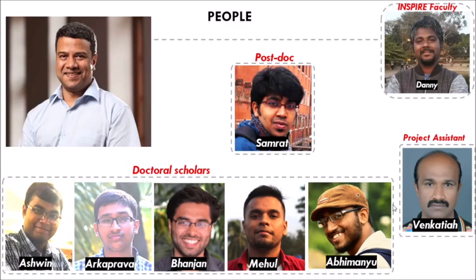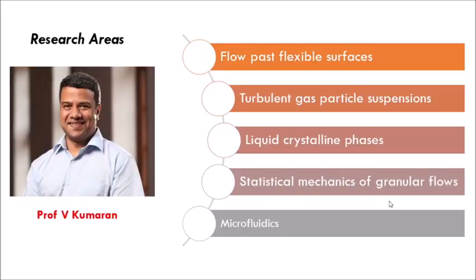The lab currently consists of three fourth-year PhD students, namely me, Aurka Prava, and Banjan, and two third-year PhD students, Mehul and Abhimanyu. We also have a post-doctoral student by the name of Naga Samrat. Danny is an INSPIRE faculty who works with Professor V. Kumaran. Venkateya is a project assistant who provides day-to-day support with the experimental and computational facilities. Our lab currently works on five broad areas: flow past flexible surfaces, turbine gas particle suspensions, liquid pipeline phases, statistical mechanics of granular flows, and microfluidics. I will be giving you a brief description of some of these areas in the upcoming slides.